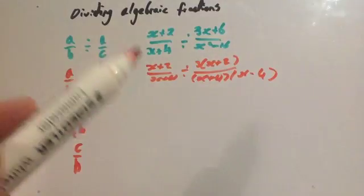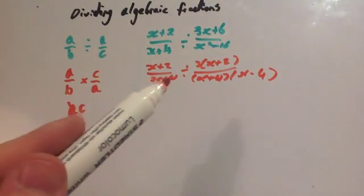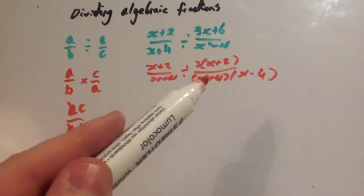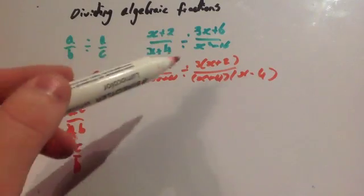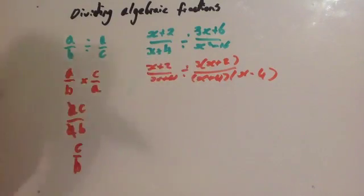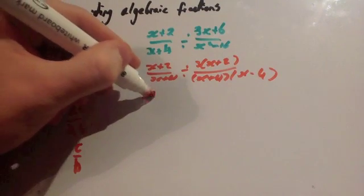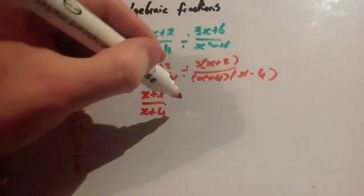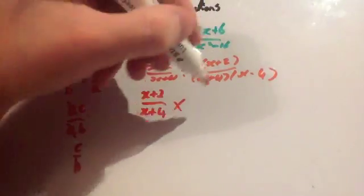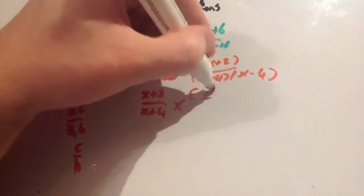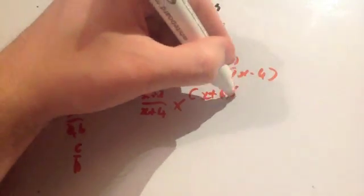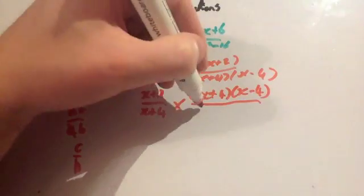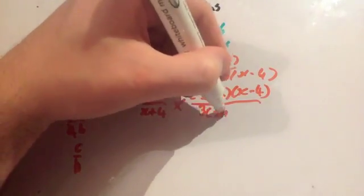So we've got X plus 2 over X plus 4, divided by 3 bracket X plus 2 over (X plus 4)(X minus 4). Now we're going to change this to multiply and take the reciprocal, so you're going to get X plus 2 over X plus 4 times X plus 4 times X minus 4 over 3 bracket X plus 2.